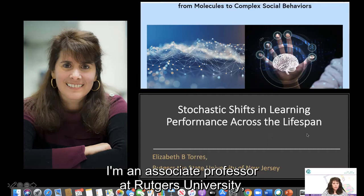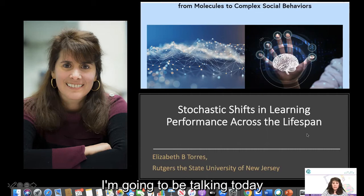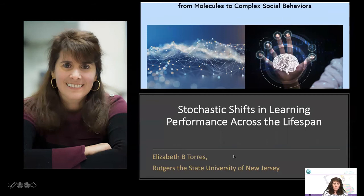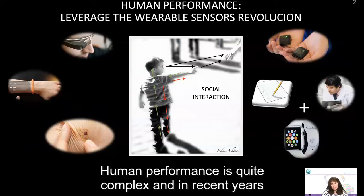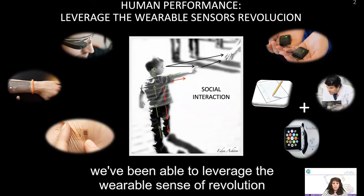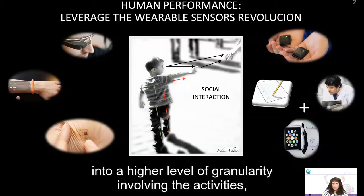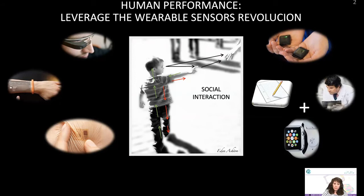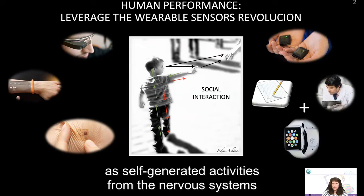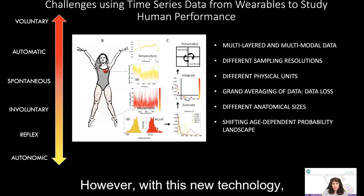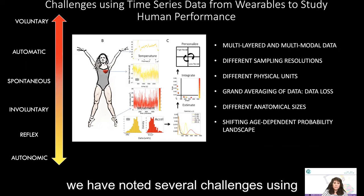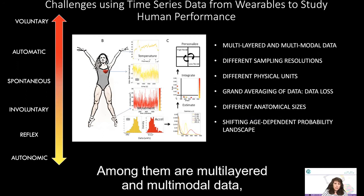Hello, my name is Elizabeth Torres. I'm an associate professor at Rutgers University in the psychology department. I'm going to be talking today about stochastic shifts in learning and performance across the lifespan. Human performance is quite complex, and in recent years we've been able to leverage the wearable sensor revolution to go beyond human observation into a higher level of granularity involving the self-generating activities from the nervous system that the sensors can record. However, with this new technology, we have noted several challenges using the time series data that the sensors offer.